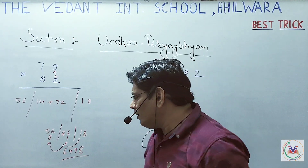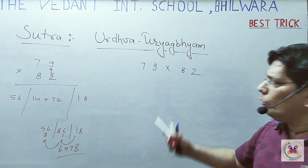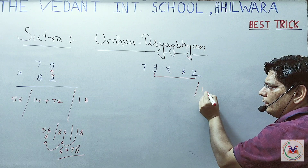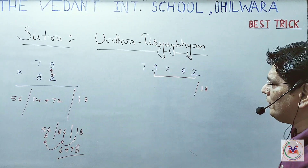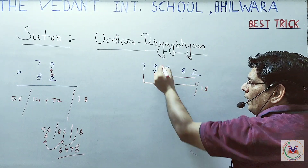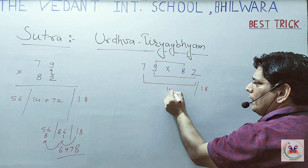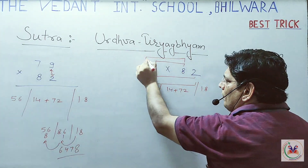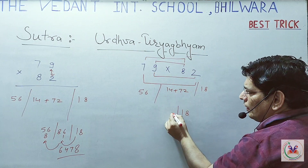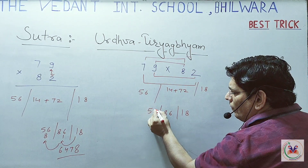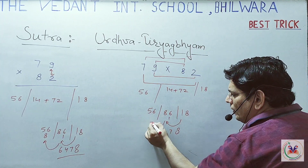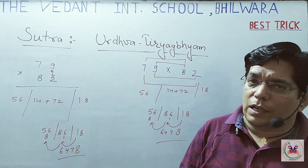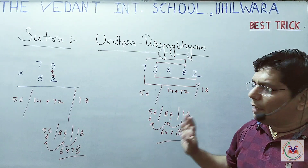So the answer is 6, 4, 7, 8 — that is 6478. If you want to multiply using the horizontal pattern, you do the same thing: 9 into 2 is 18, then 7 into 2 plus 9 into 8 gives 14 and 72, and 7 into 8 is 56. You will get the same answer: 18, 86, 56 — leading to 6478. Both formats give the same result.